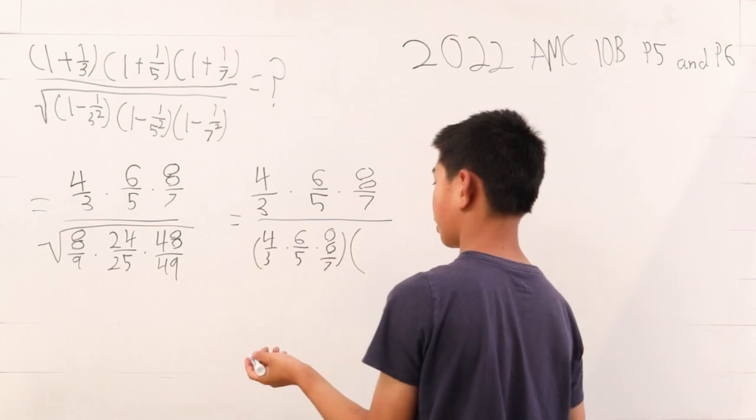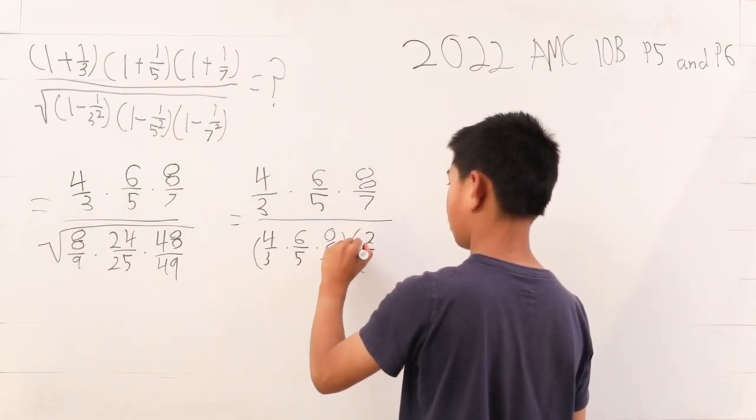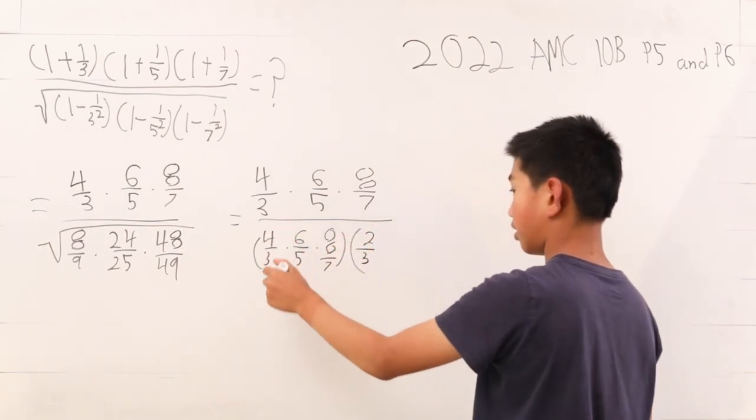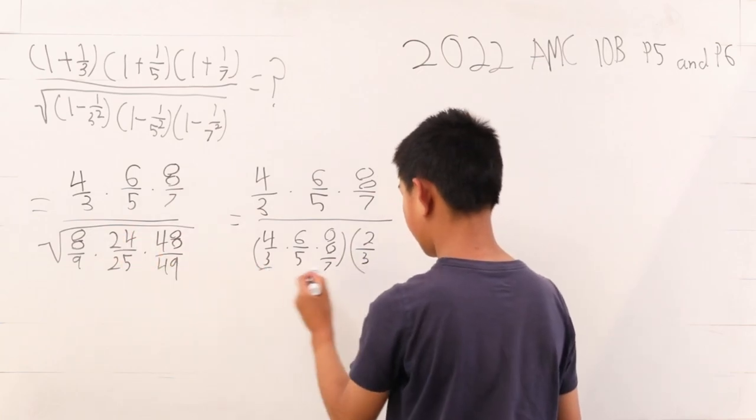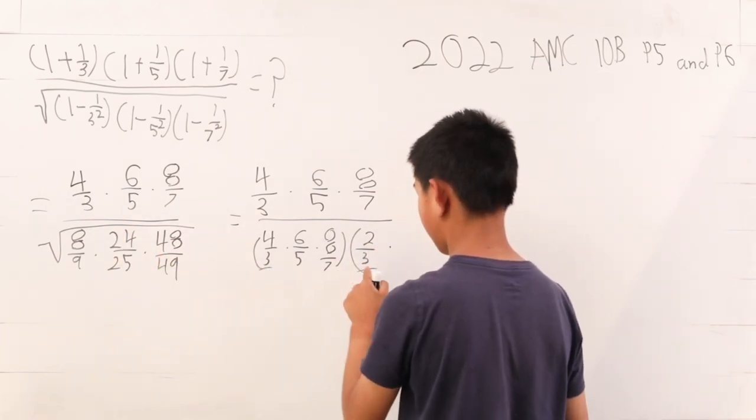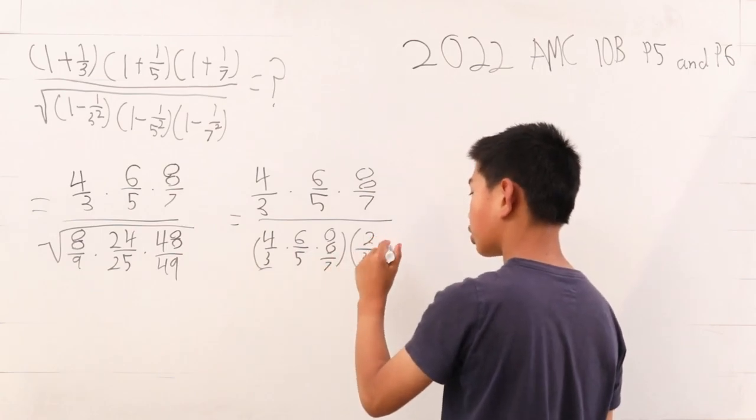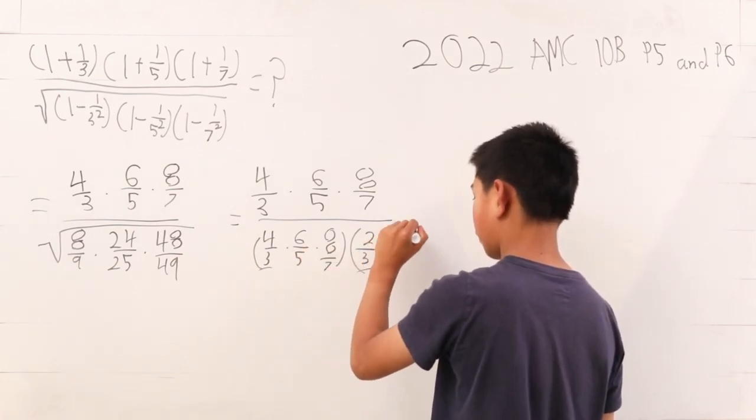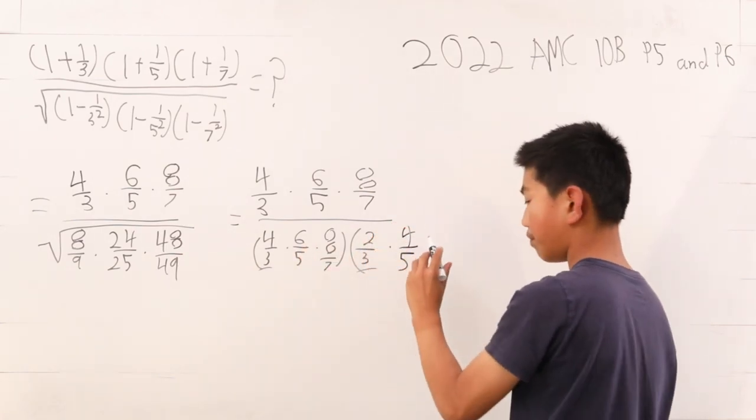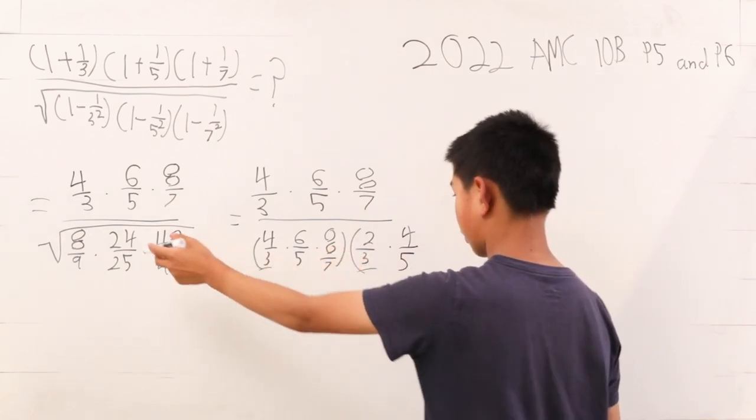And then you have to multiply this again by 2/3 to get the 8/9. And then you multiply this by 4/5, because 4/5 times 6/5 is 24/25.